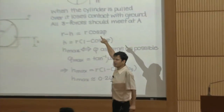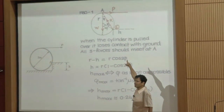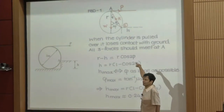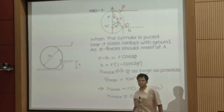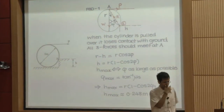A student asks about how 2φ arises. The answer: there is an isosceles triangle — if this angle is φ, the other angle is also φ, so φ plus φ gives 2φ there as the external angle.